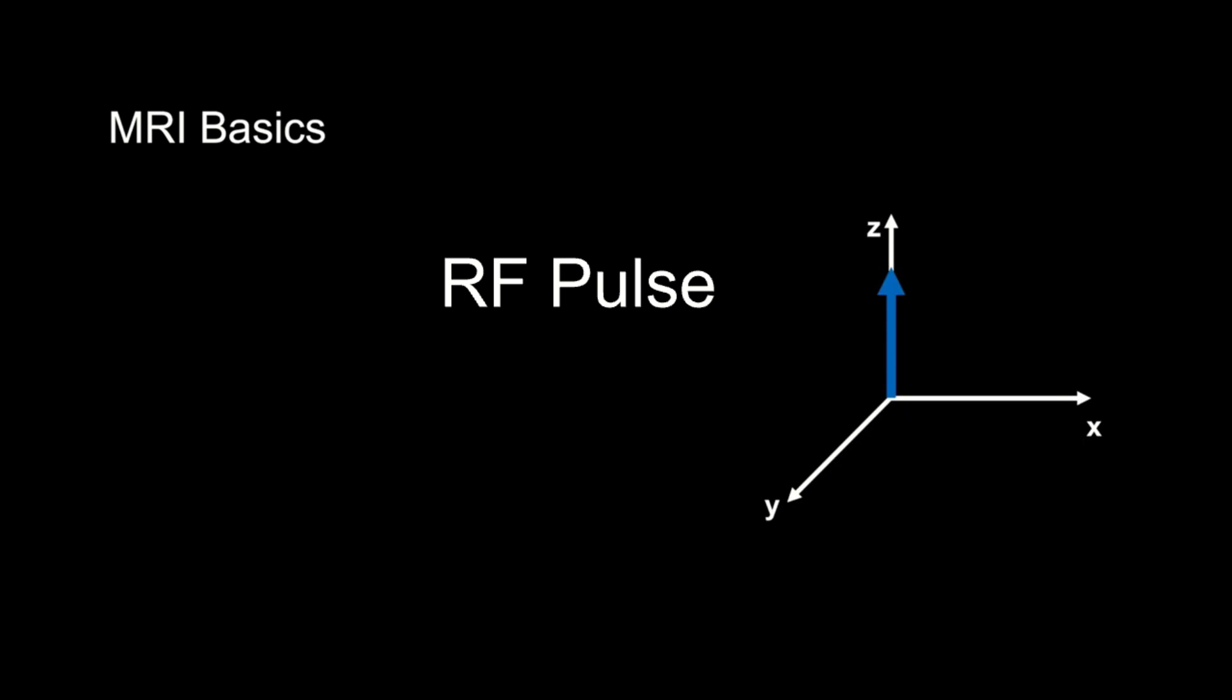So again, after the RF pulse, we've tipped our net magnetization into the XY plane. And as we showed earlier, the nuclei are also precessing like a top at a particular frequency in sync in that plane. This doesn't happen forever, and over time you start to lose your signal.